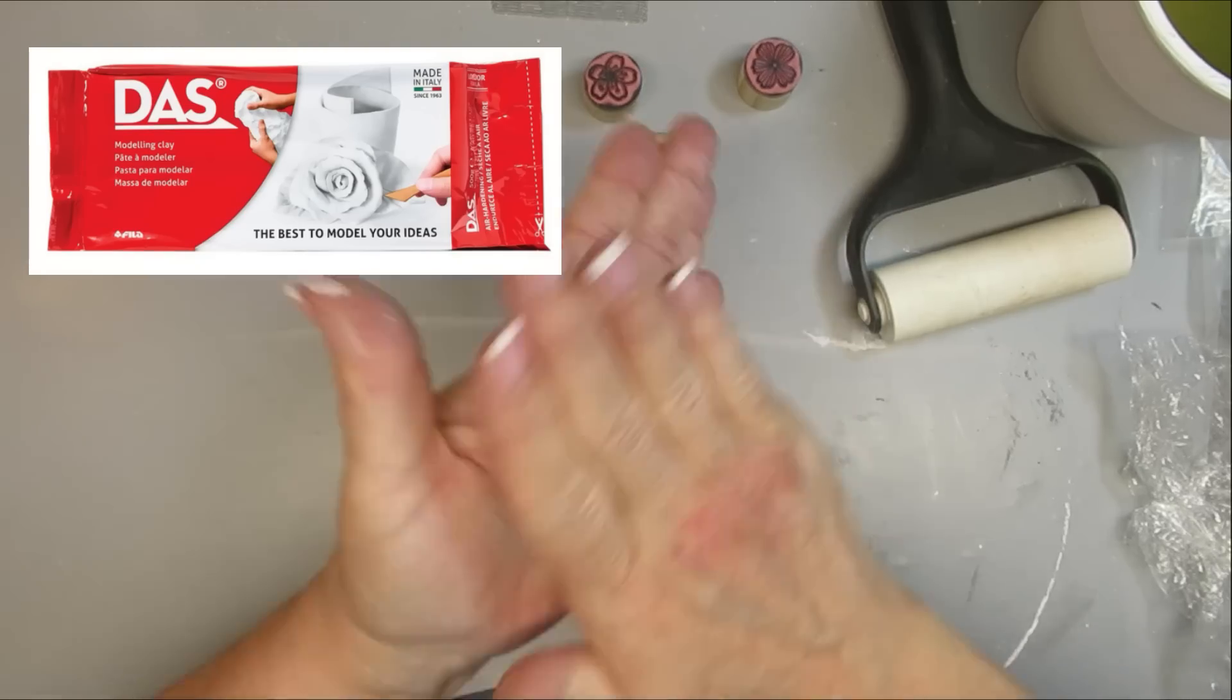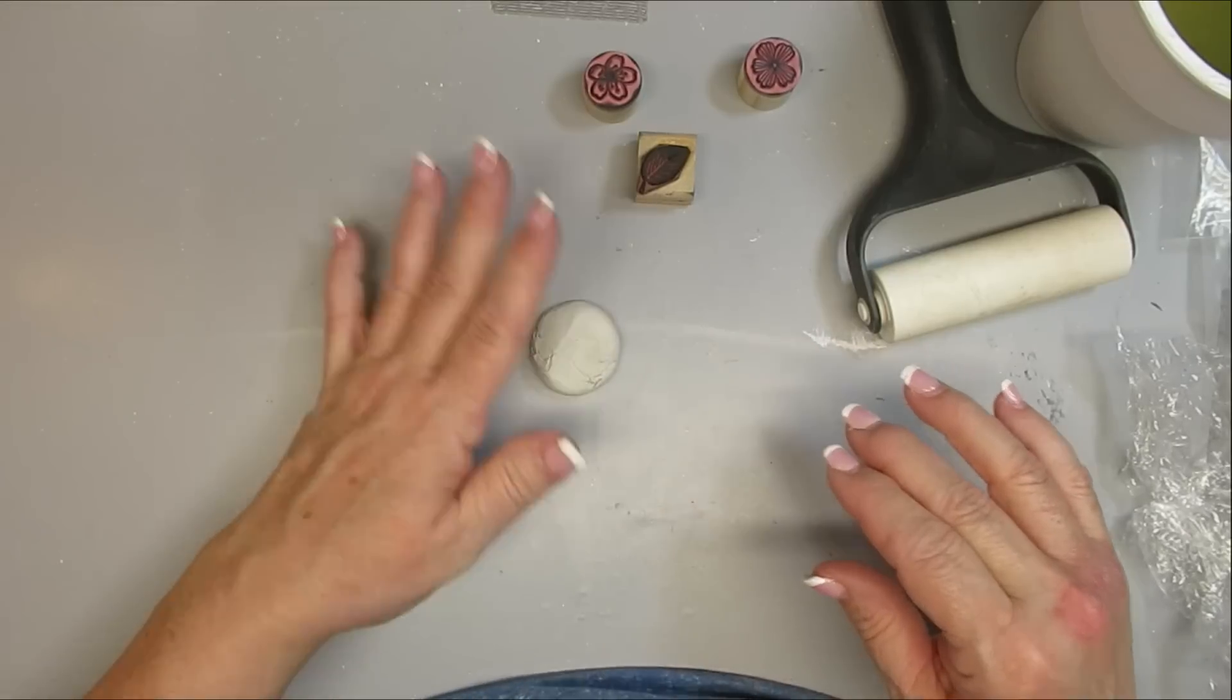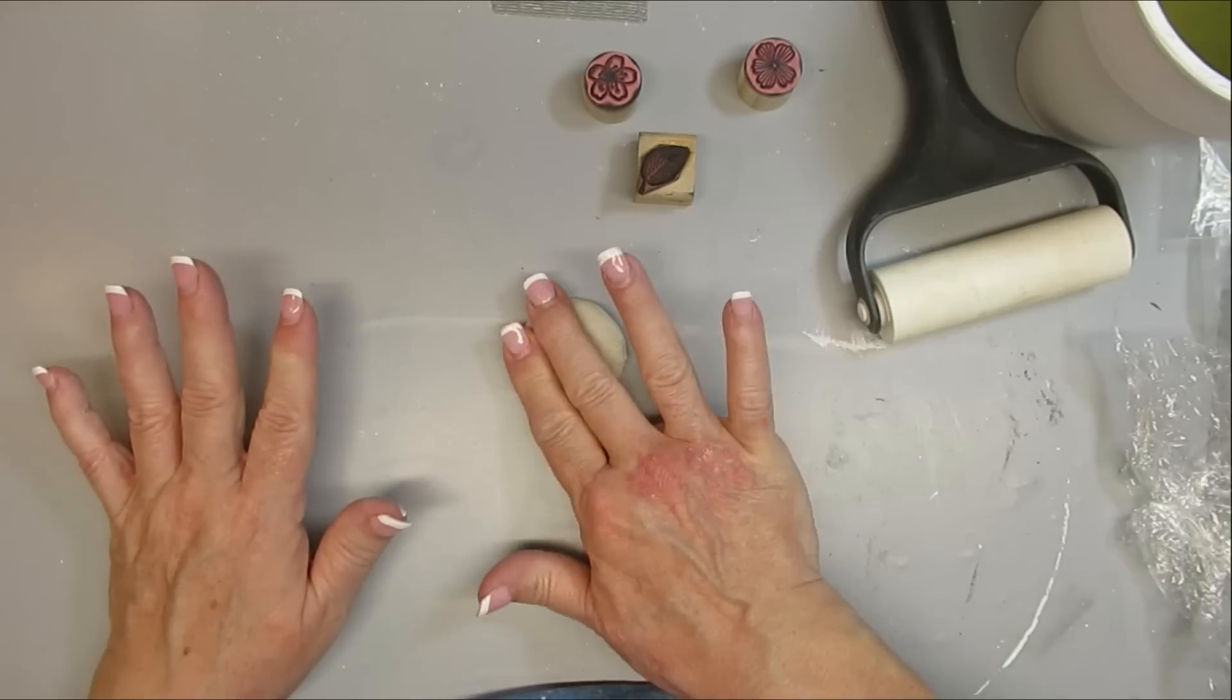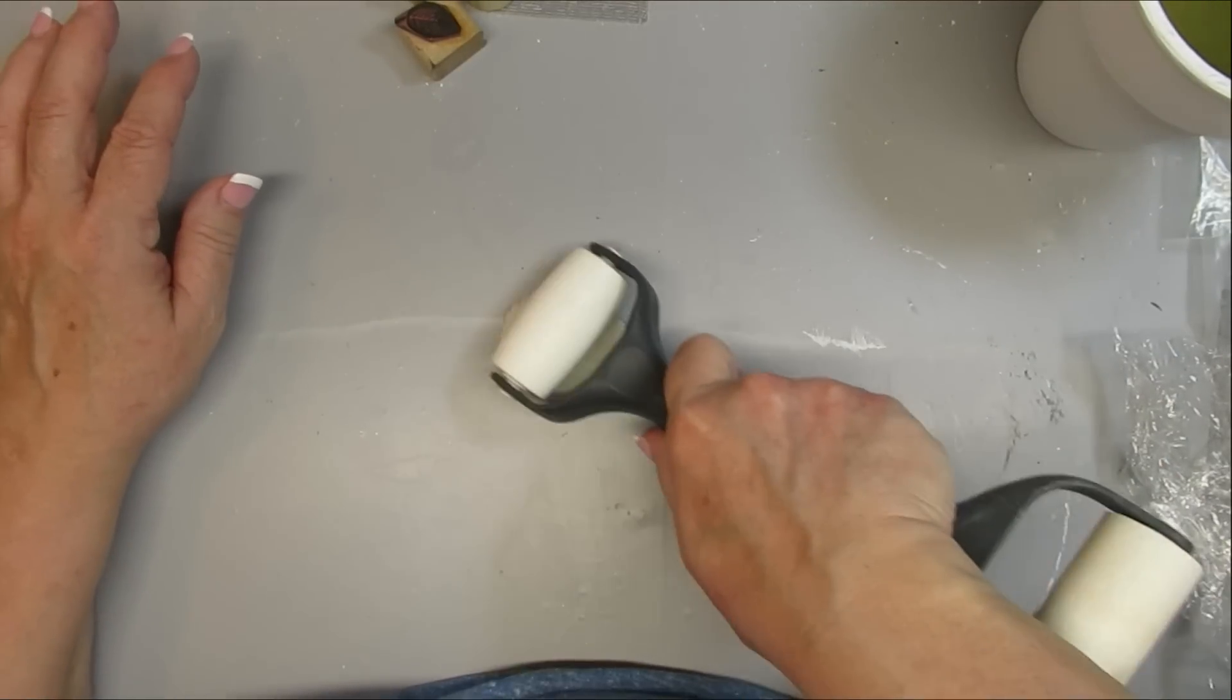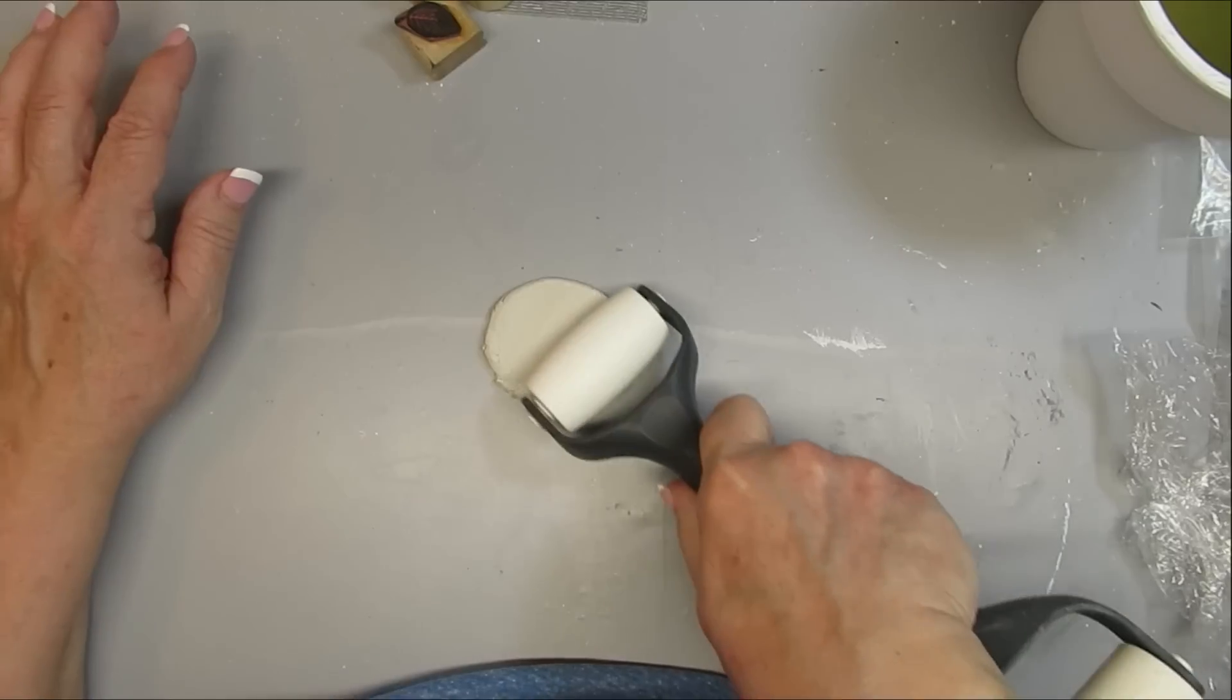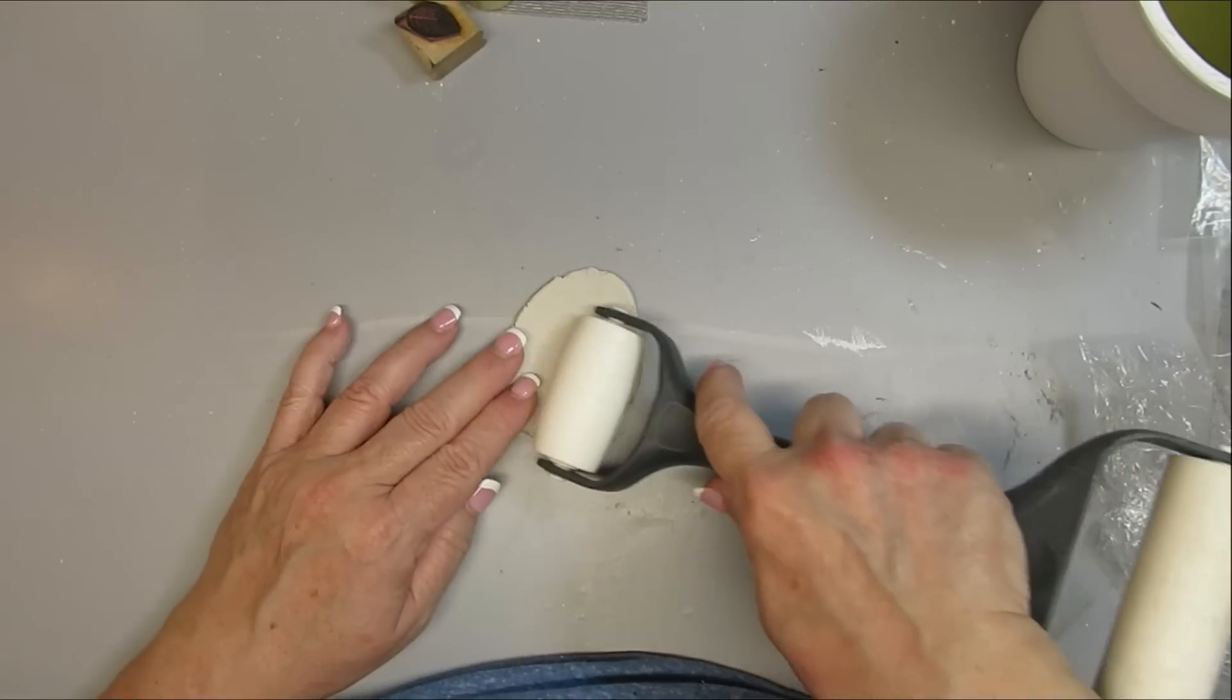What I'm going to do is just squish it down into sort of a circle or an oval shape. I'm using this old roller that I had from the Pampered Chef. I've got a couple of them, so this was perfect to just help me roll out this medallion into a nice even piece.